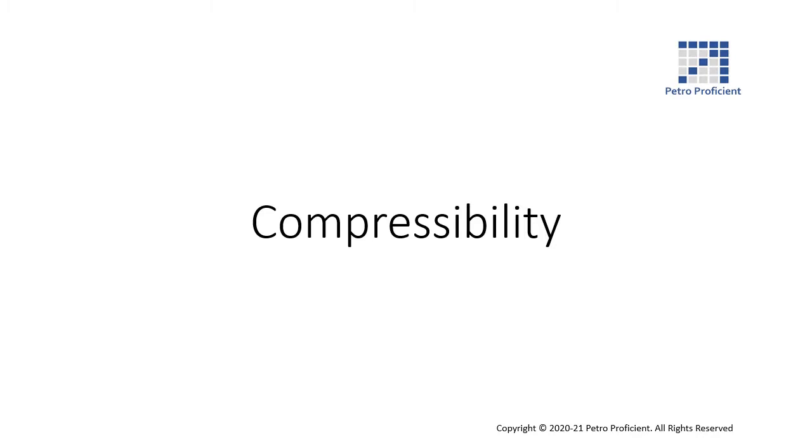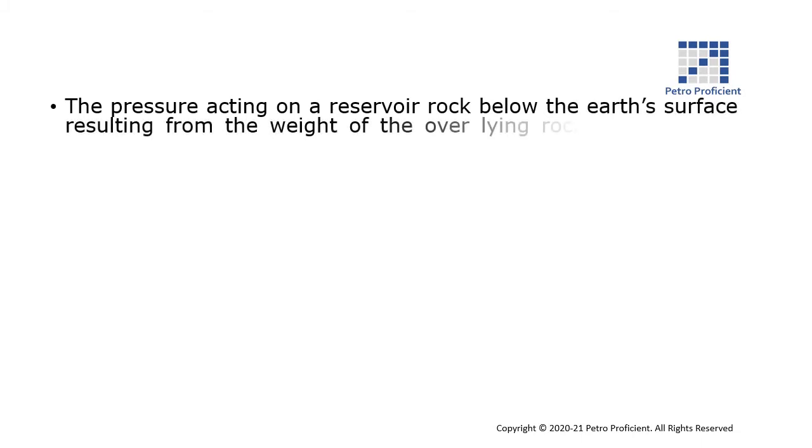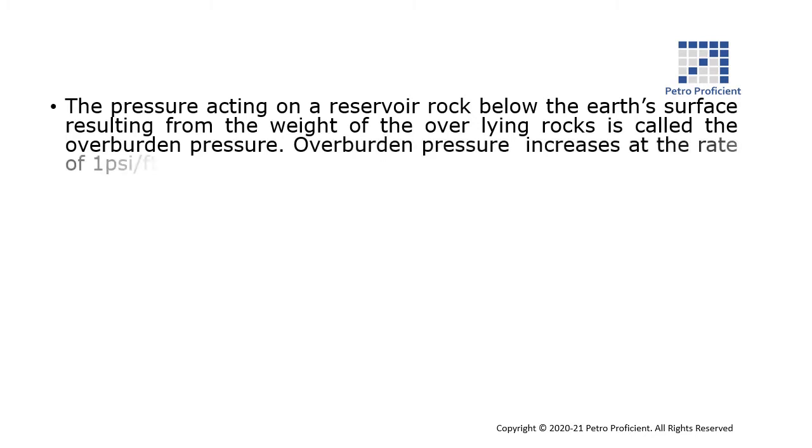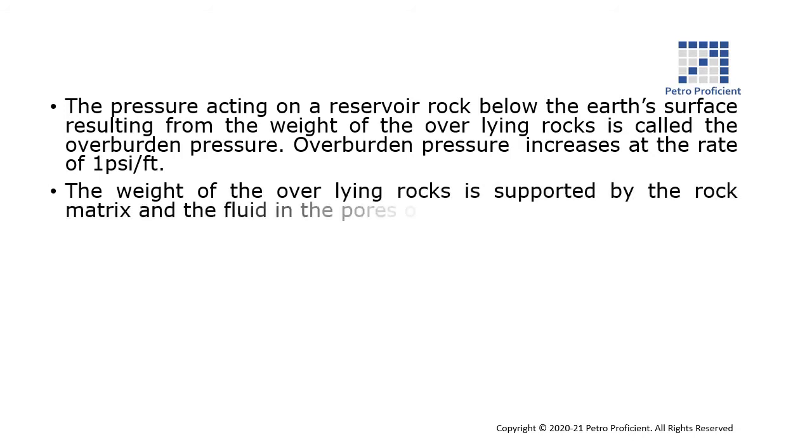The pressure acting on a reservoir rock below the earth's surface resulting from the weight of the overlying rocks is called the overburden pressure. Overburden pressure increases at the rate of one pound per square inch per foot. The weight of the overlying rocks is supported by the rock matrix and the fluid in the pores of the rock.